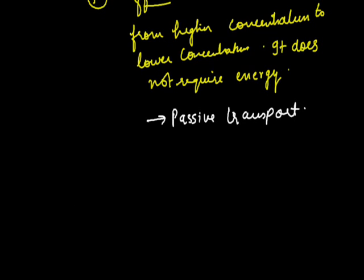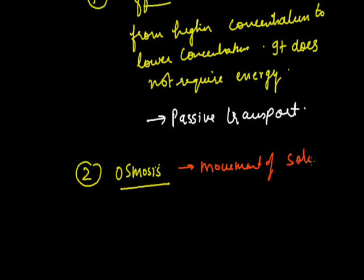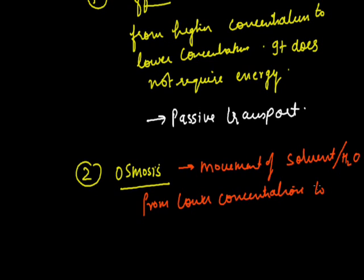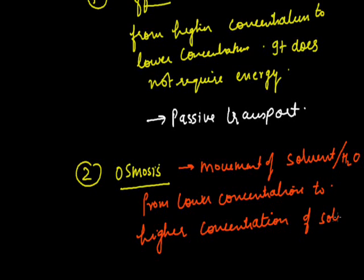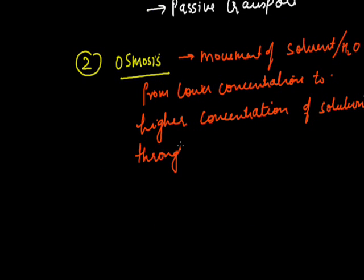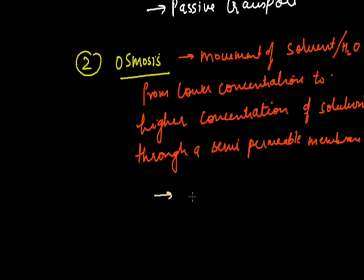The second method for transportation of molecules across the membrane is osmosis. Osmosis is defined as the movement of solvent or water from lower concentration to higher concentration of solution, through a semi-permeable membrane. Osmosis can also be called the diffusion of solvents.